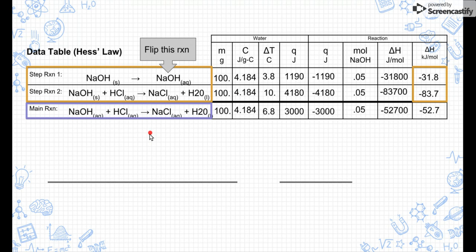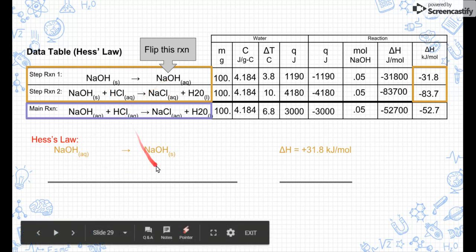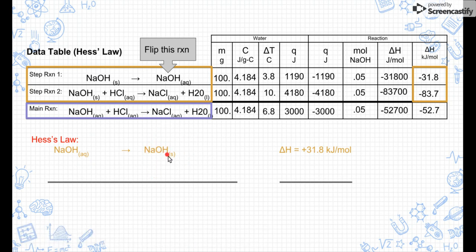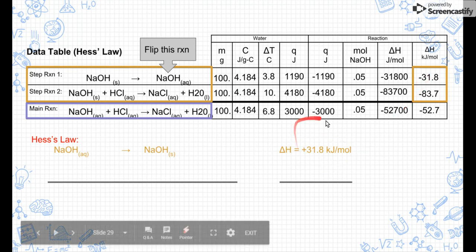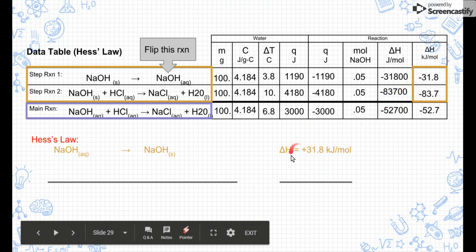We need to flip this reaction. So in our notebook, let's do that. Let's make a little Hess's Law section. Let's flip that reaction. Let's put sodium hydroxide on the left and sodium hydroxide on the right, aqueous on the left, solid on the right. Now, if you remember when we talked about Hess's Law and all the tips and tricks that we needed to follow, when we flip a reaction, we need to change the sign of delta H. So I'm going to rewrite delta H down here. I'm going to rewrite its enthalpy in kilojoules per mole. But this time, I'm going to change it from a negative to a positive.